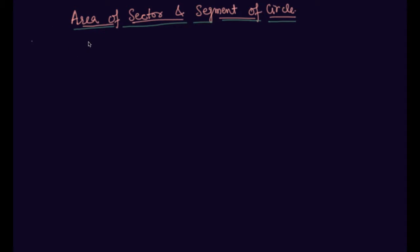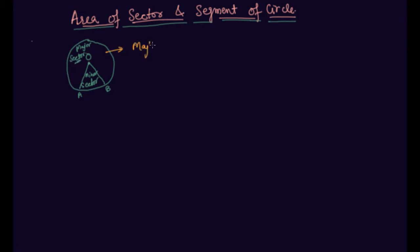What is a sector? Let me draw first. This is a circle with center O, and this is a sector. This you can call the minor sector. And the rest part of the circle will be called the major sector. This is called major and this will be called minor.